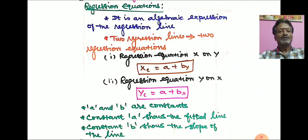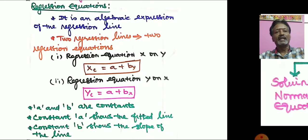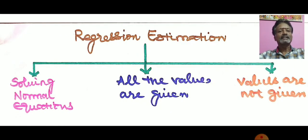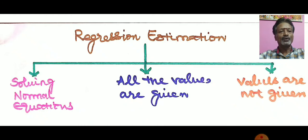Here a and b are called constants or parameters. The constant a shows the intercept of the fitted line, and the constant b shows the slope of the line. The regression will be estimated in three ways: one is by solving normal equations, number two is when all the values are given, and number three is when the values are not given. In this video, we are going to estimate regression with the help of some examples.